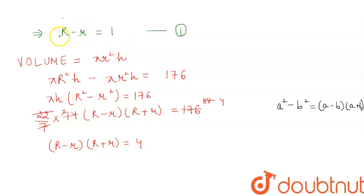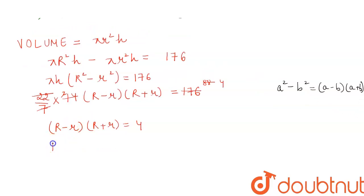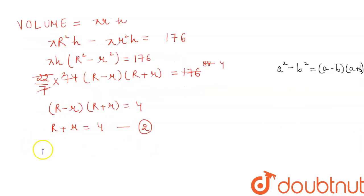So we will be left with (R - r)(R + r) = 4. Now from our first equation we can take the value of R - r to be 1, so substituting its value we will get R + r = 4. Let this be our equation number 2. Now we have two equations which say R + r = 4 and R - r = 1.